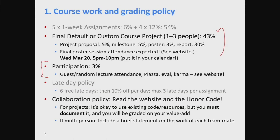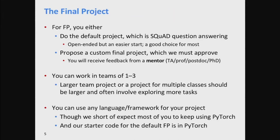The main thing I wanted to get to today is to talk about the final project. For the final project, there are two choices: you can either do our default final project — which is doing SQuAD question answering — or you can propose a custom final project which we then have to approve. If you have an outside mentor, you can say who they are in your project proposal; otherwise we'll attempt to assign you a mentor from the core staff.